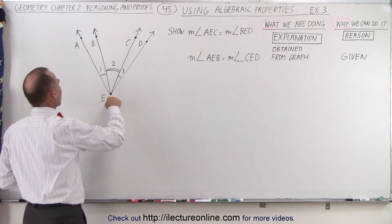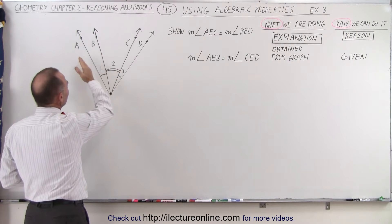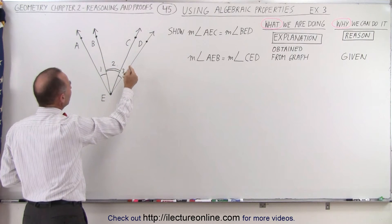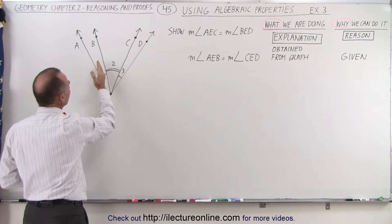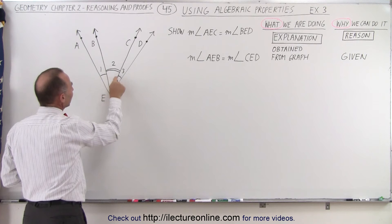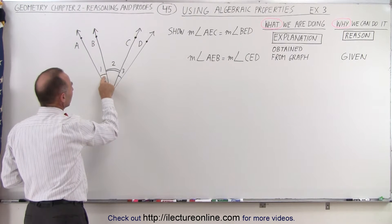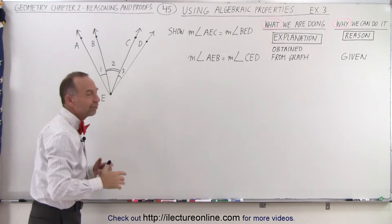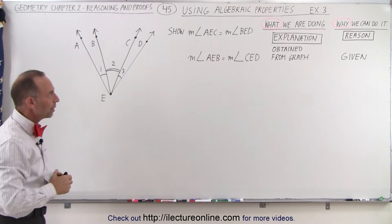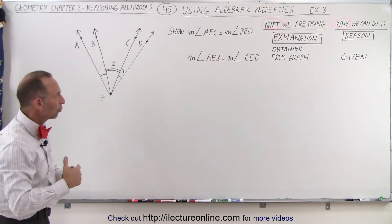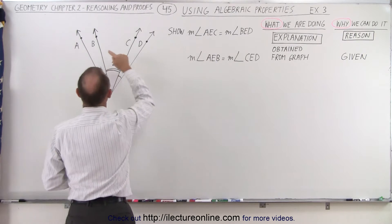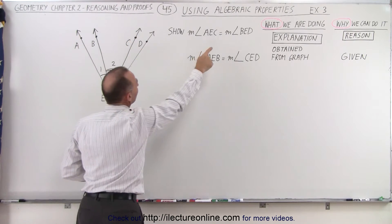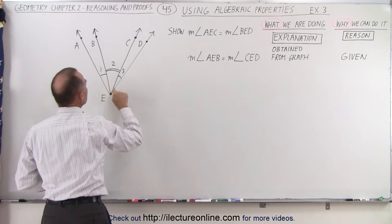We have three angles. We have the angle made up from the rays from E to A, from E to B, from E to C, and from E to D. We have angle 1, 2, and 3. The measure of angle 1 is equal to the measure of angle 3, and the measure of angle 2 is different from the other two.